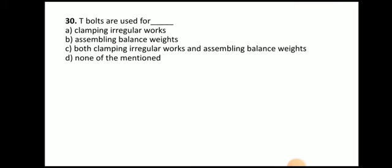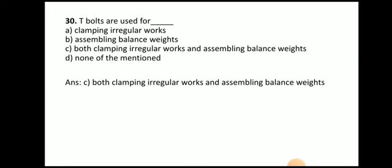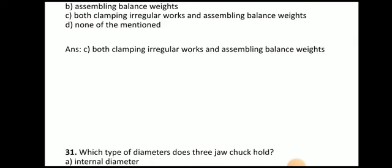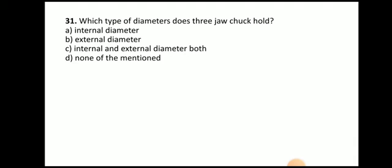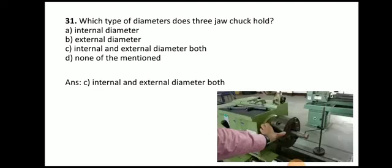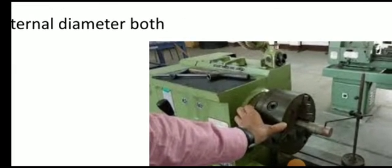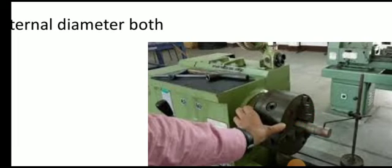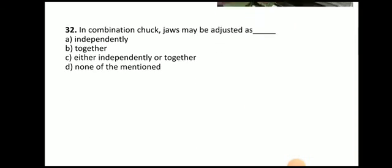Next question: T-bolts are used for what? The answer is both clamping irregular work and assembling balance weight. Next question: which type of diameter does a three jaw chuck hold? The answer is internal as well as external diameter — with this chuck we can hold internal diameter as well as external diameter.